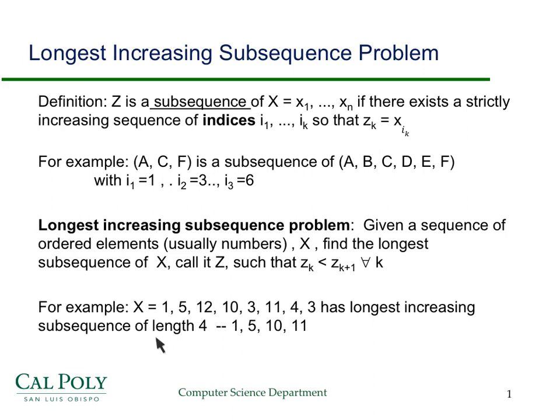For example, here's a simple example. Here's our sequence. It's got eight entries in it and the longest increasing subsequence happens to be the entries 1, 5, 10, and 11. It's clearly a subsequence and it goes up at each step.